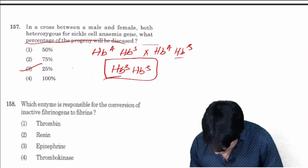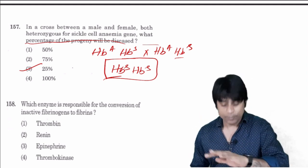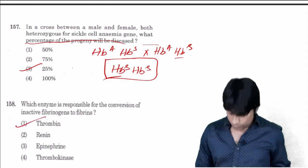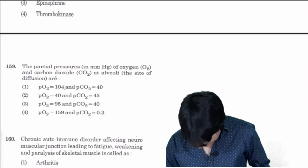Which enzyme is responsible for conversion of inactive fibrinogen to fibrin? Straight away the answer is thrombin, one is the answer.